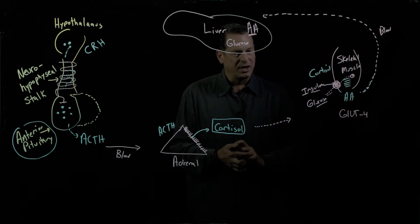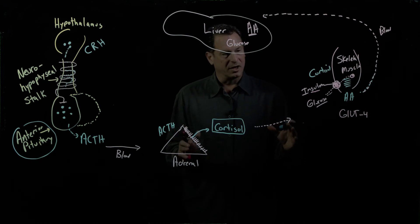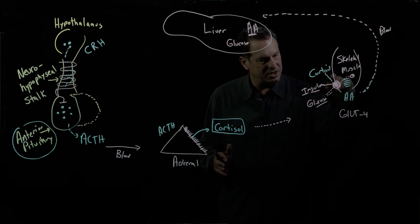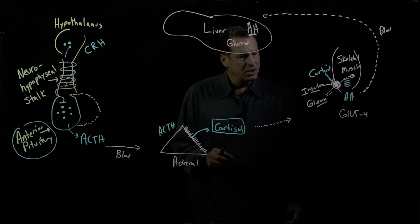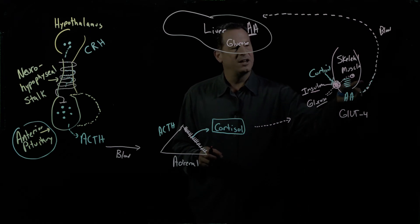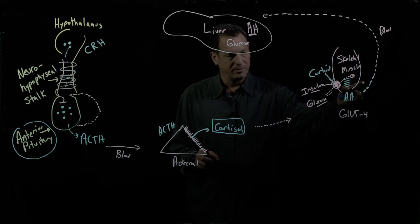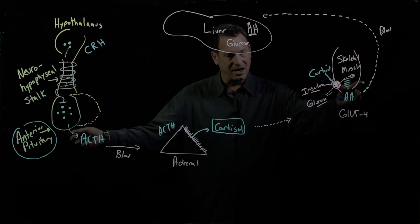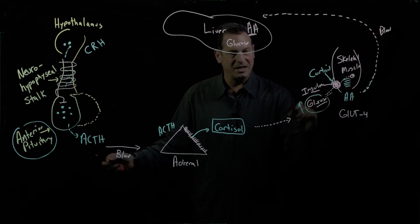Now what's really interesting and incredibly important clinically is cortisol inhibits this process. So now glucose doesn't get taken up into the muscle so well. And if glucose doesn't get taken into the muscle, the glucose builds in the plasma.